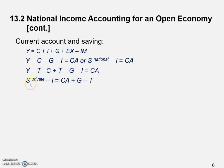We rewrite the equation by replacing Y minus T minus C with S_private (private saving), keeping minus I on the left-hand side, and moving T minus G to the right-hand side. Because we switch sides, we must switch the sign — so T minus G becomes G minus T. On the worksheet, you'll find numerical examples of these mathematical derivations.